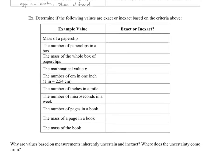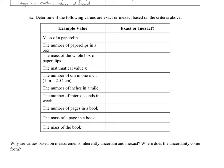Let's work through some examples. Pause the video and decide whether each value is exact or inexact. The mass of a paperclip is inexact — to obtain it, we have to perform a measurement, and any measurement produces some kind of error. The number of paperclips in a box is exact because we can count them. The mass of the whole box of paperclips is inexact because we have to measure it.